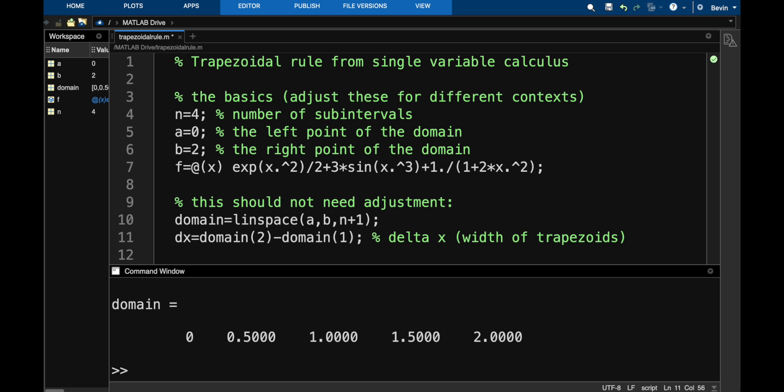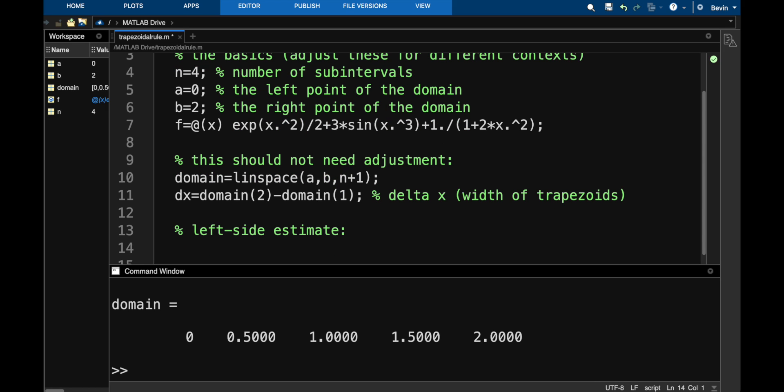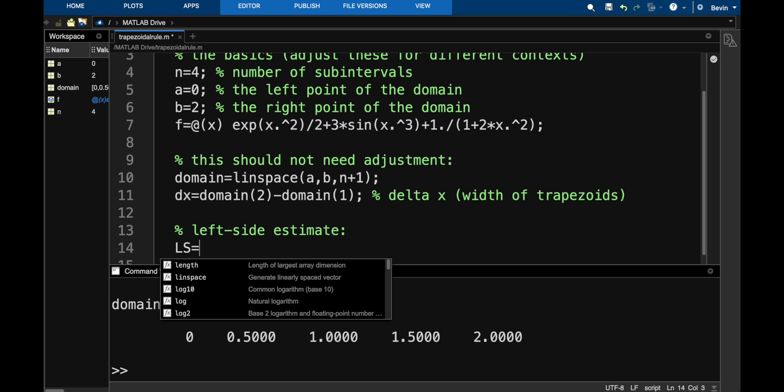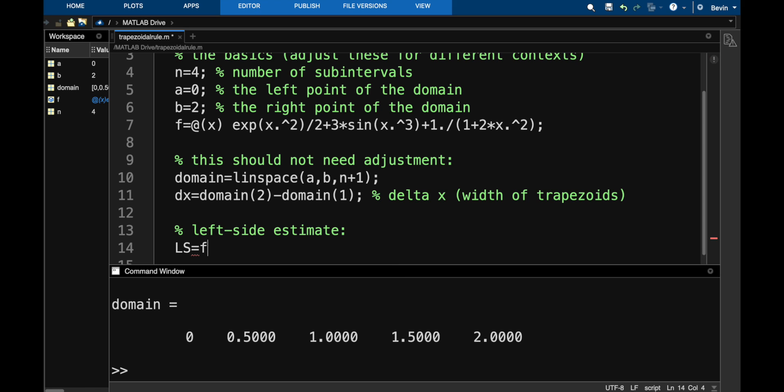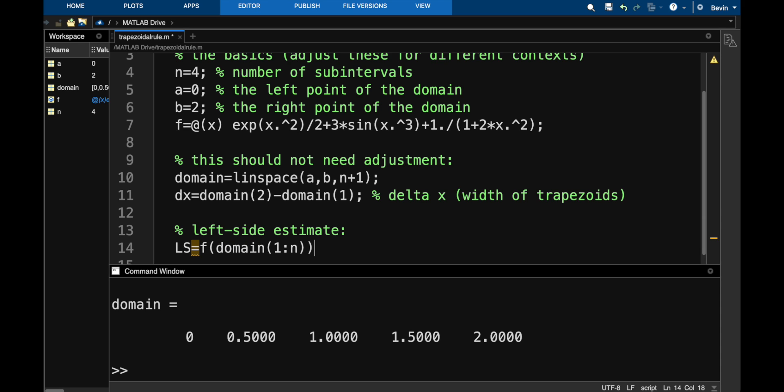In order to compute this, what I'm going to do is the left point estimates plus the right point estimates divided by two. So let me do the left side estimate. For the function outputs, I need to evaluate f on the first n entries in the domain vector. So if you're looking at this domain vector I have in the command window, I want to plug in 0, 0.5, 1 and 1.5 into f. I'm going to call this left side and that's going to be f of domain the first entry through the nth entry. Notice here n is 4 and I do indeed want the first four entries in this vector. So that's the function value and then the width is dx.